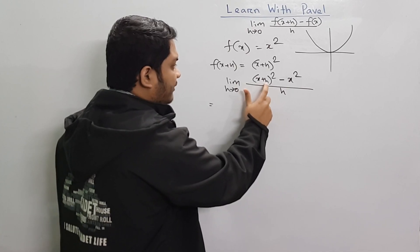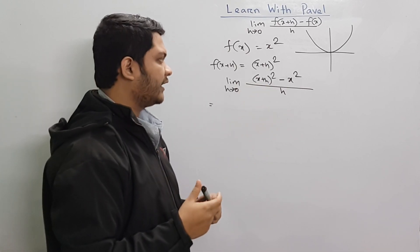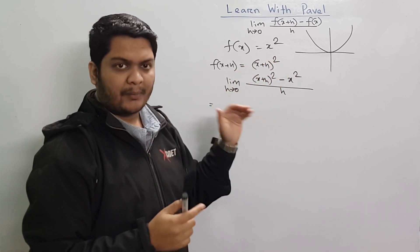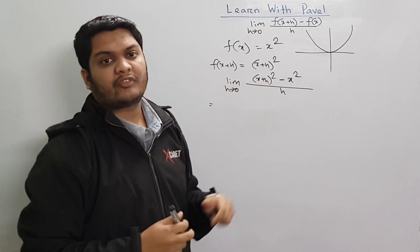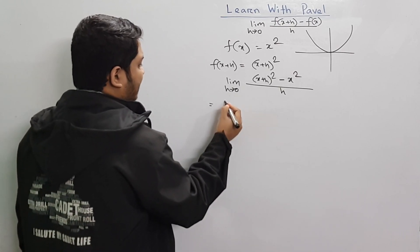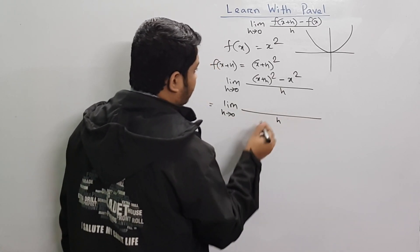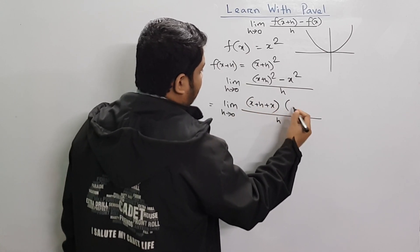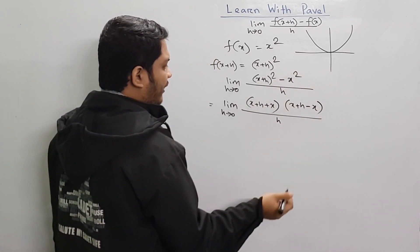This is a very easy process. This is a square minus b square formula. Let's take a look at limit h approaches 0. This is x plus h plus x - a plus b into a minus b.